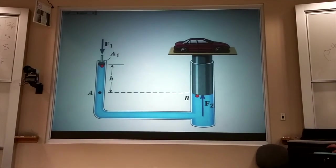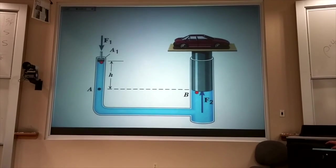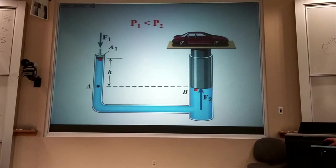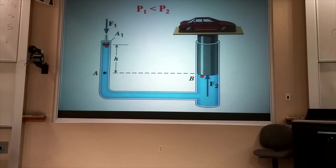Now, in practice, you would actually put point B lower in the liquid, so that you already start out with a higher pressure there to support the weight of the actual device.